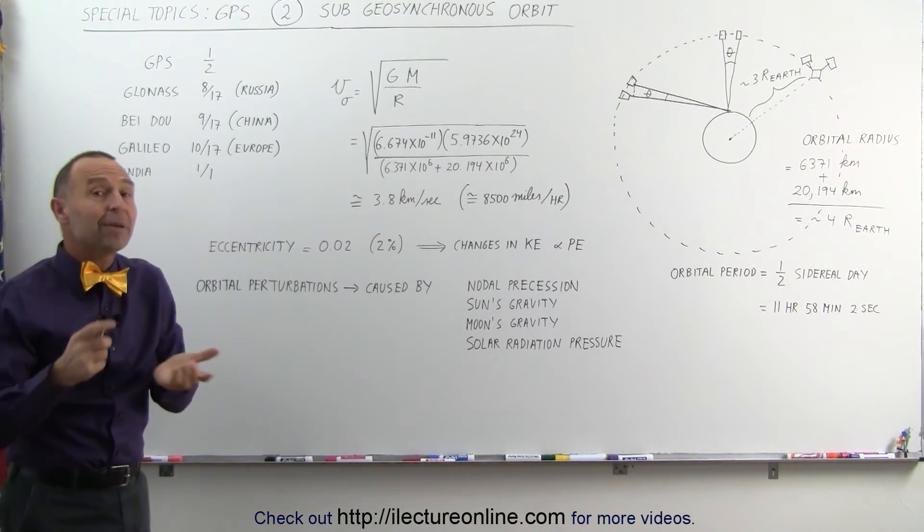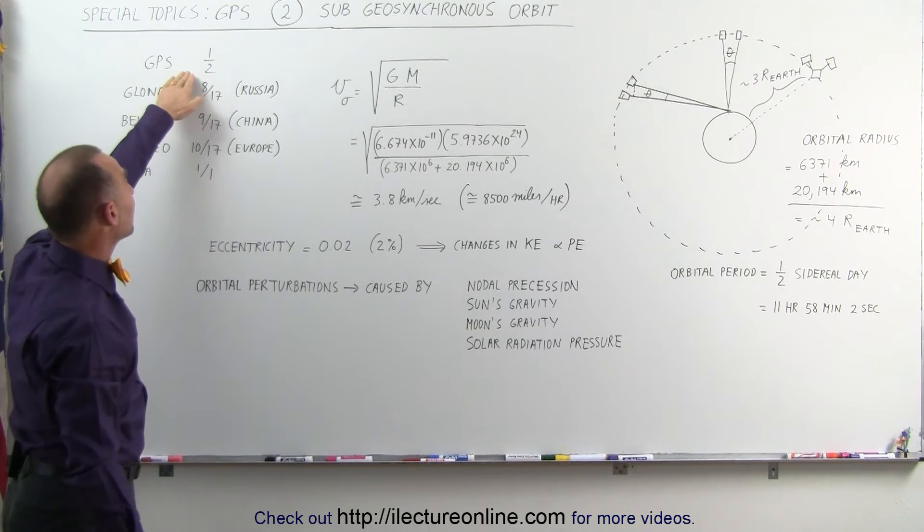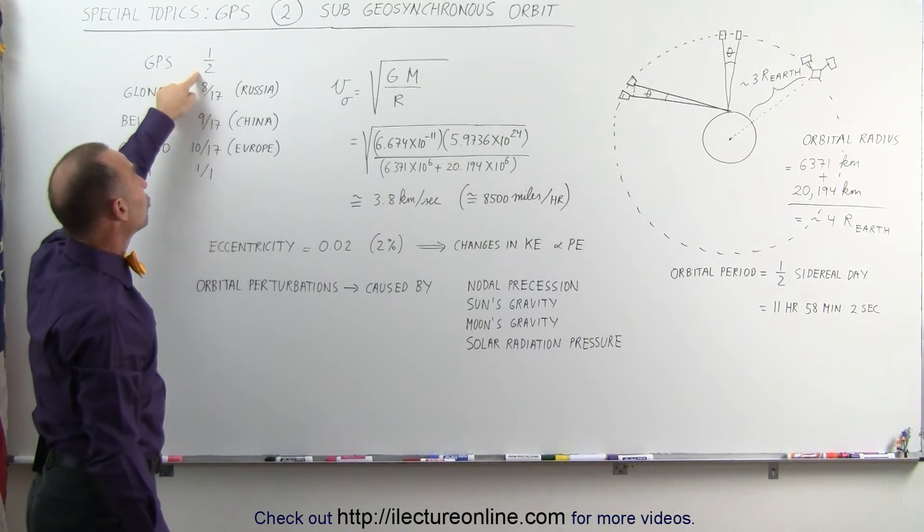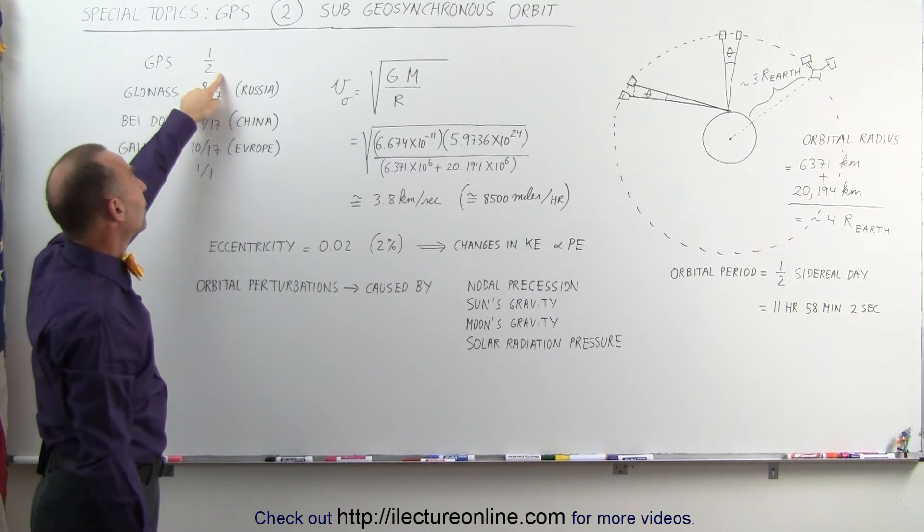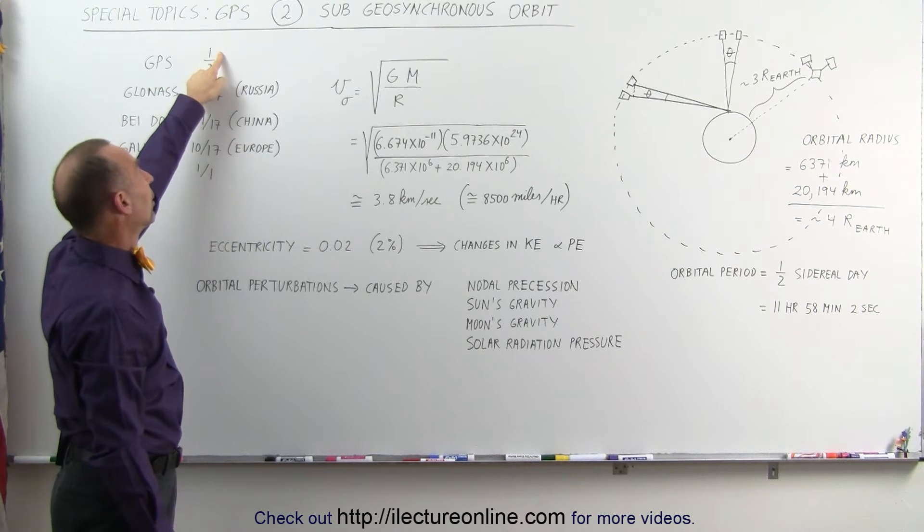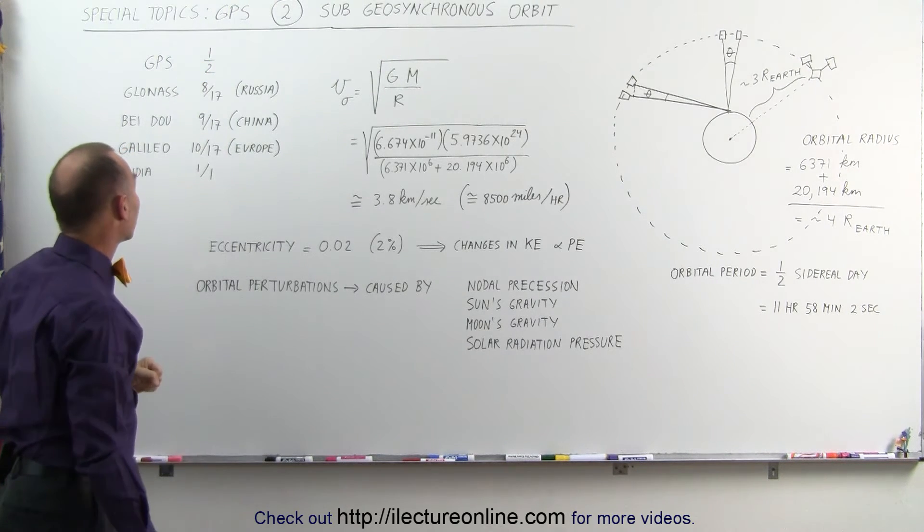Notice there are other GPS-type systems. Our system here, we call it GPS, is in exactly a 1 to 2 ratio, meaning it will make two rotations around the Earth for every one, or two trips around the Earth for every one rotation of the Earth.